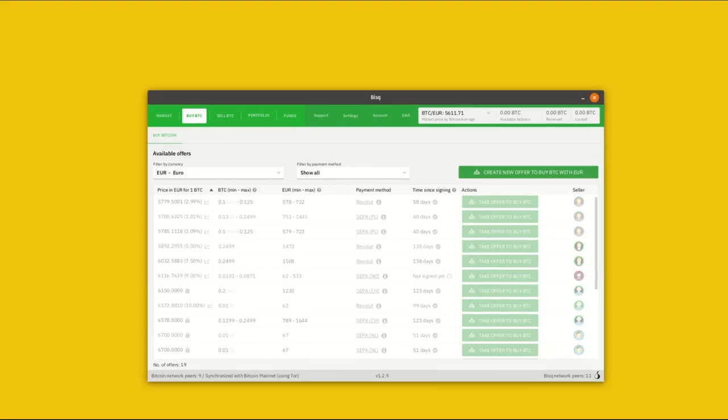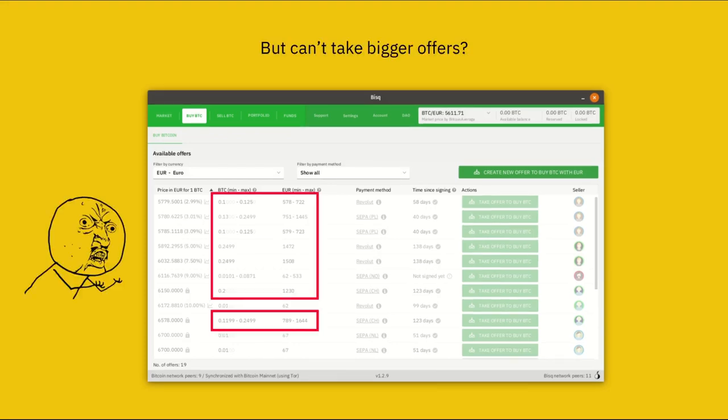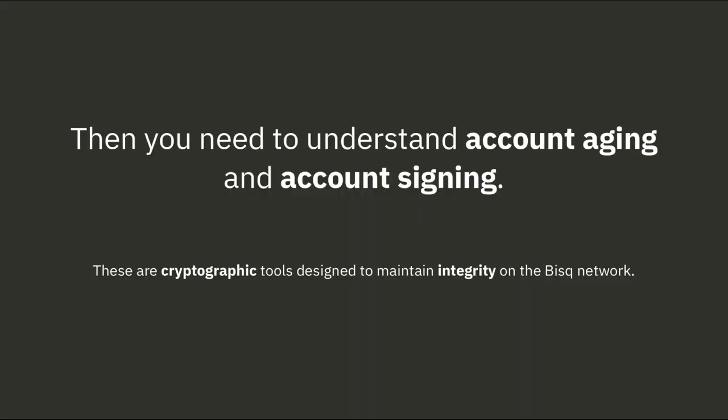Would you like to make your Bisq trades bigger and buy or sell more Bitcoin at one time? Then you need to know about two important mechanisms: account aging and account signing. I want to make clear that these are both cryptographic means of keeping the Bisq network safe. There is no department of people somewhere in a back room verifying or rejecting your accounts. And they're pretty simple to use, so let's go through them now.